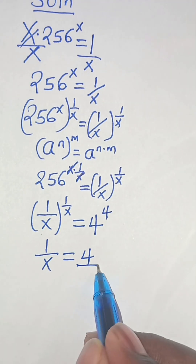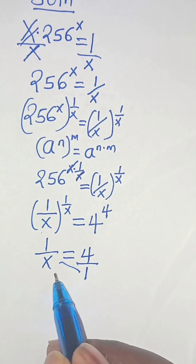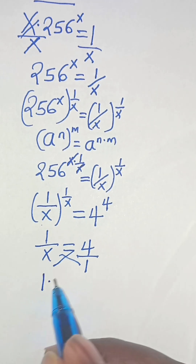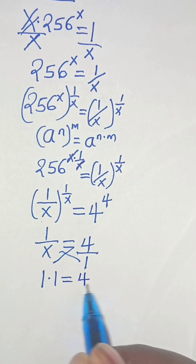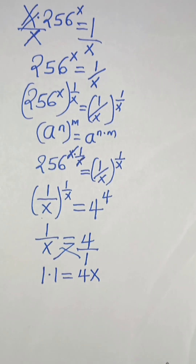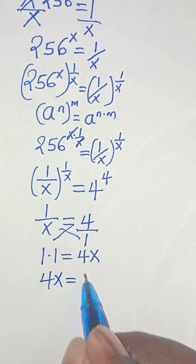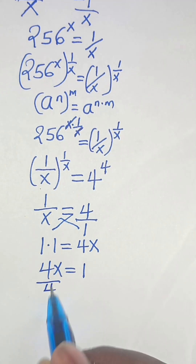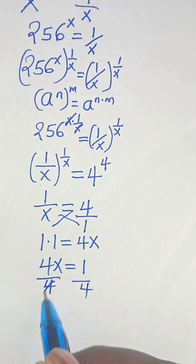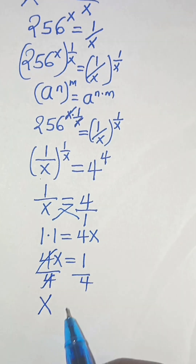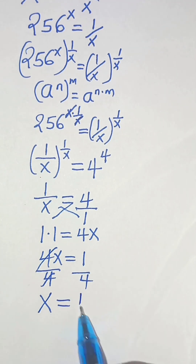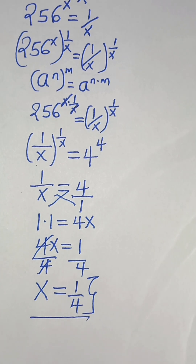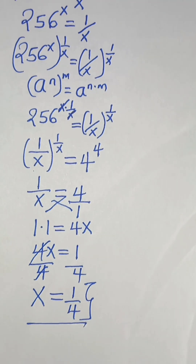Since 1 over x equals 4, which is 4 over 1, we cross-multiply: 1 times 1 equals 4 times x, giving us 4x equals 1. Dividing both sides by 4, the value of x is equal to 1 over 4. Thank you for watching.